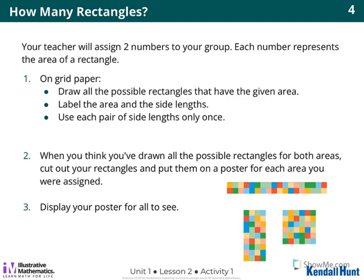Today I'm going to assign each group two numbers. Each number represents the area of a rectangle — remember, area is the number of tiles on grid paper. Each group will need centimeter grid paper. You're going to draw all the possible rectangles that have the given area, label the area and side lengths, and use each pair of side lengths only once. So if you use six times seven, you can't also do seven times six.